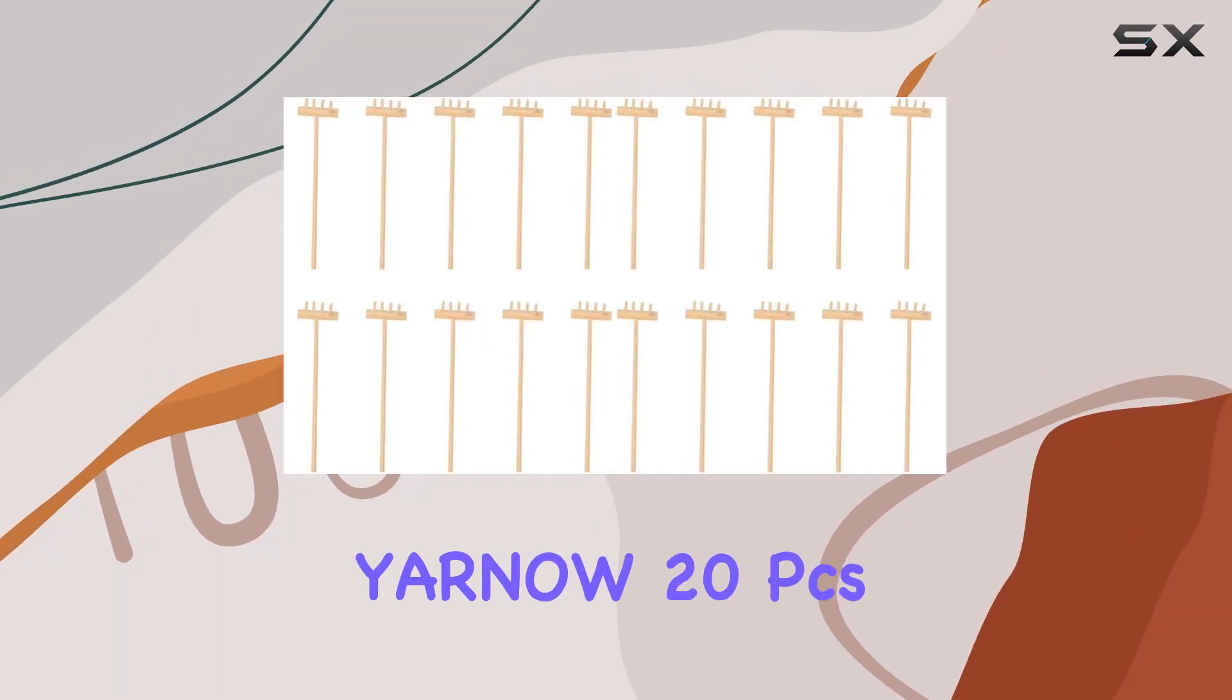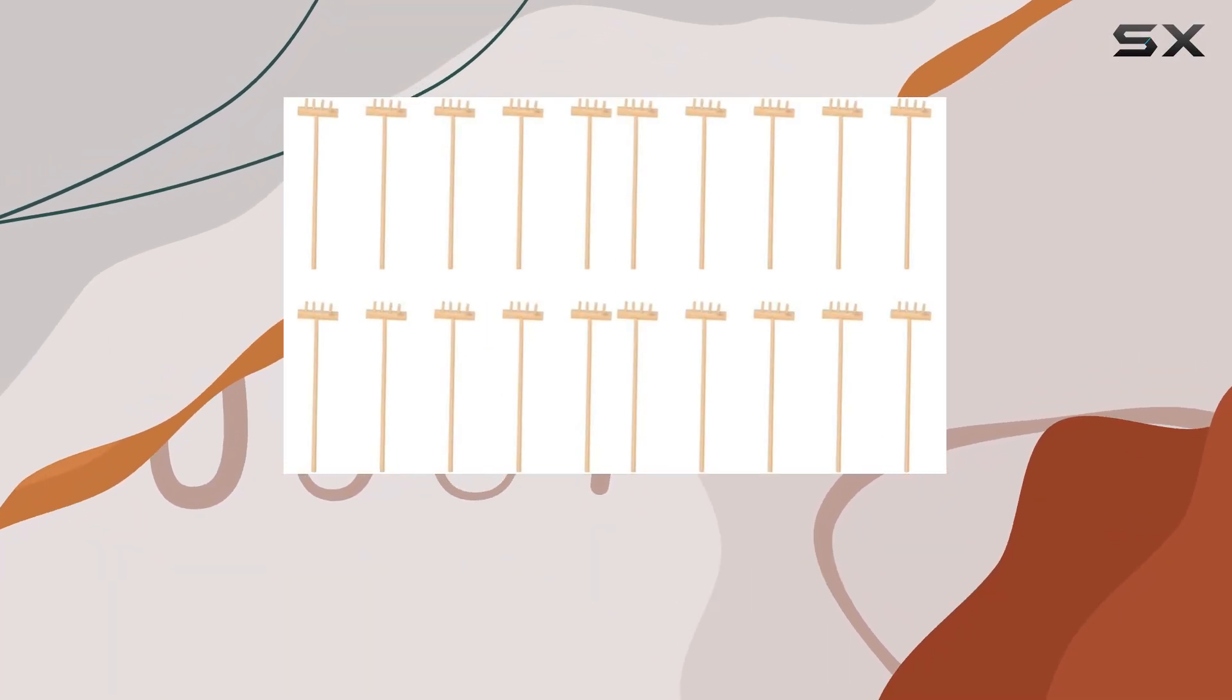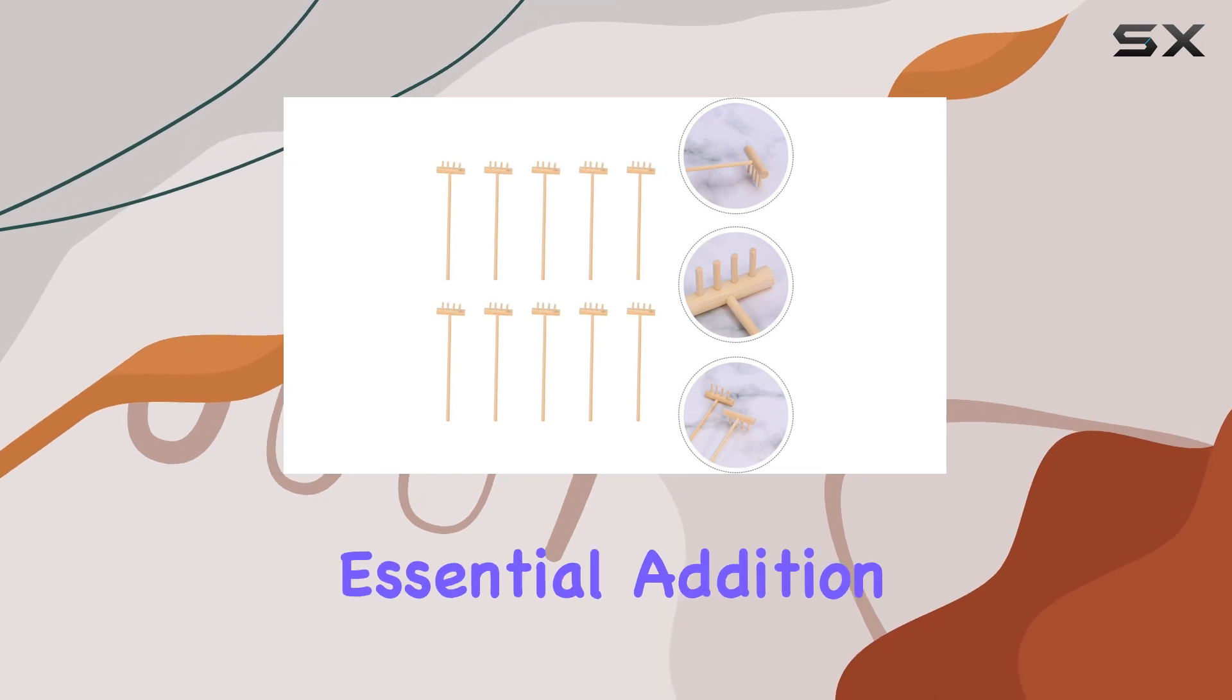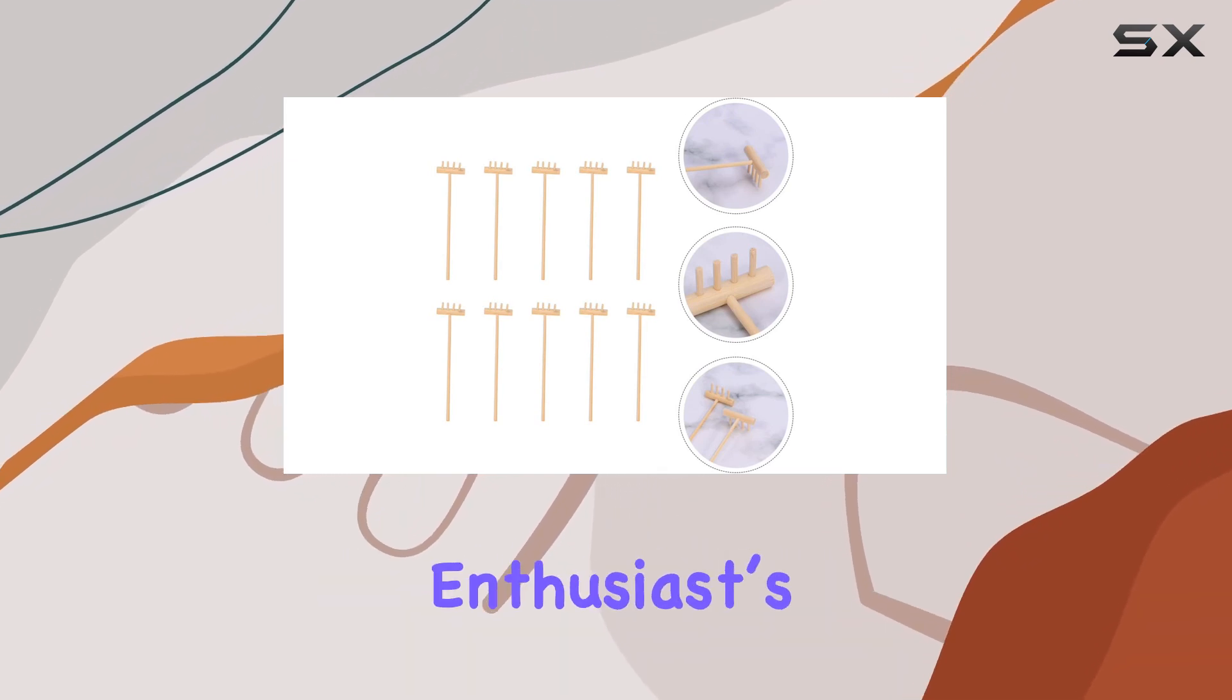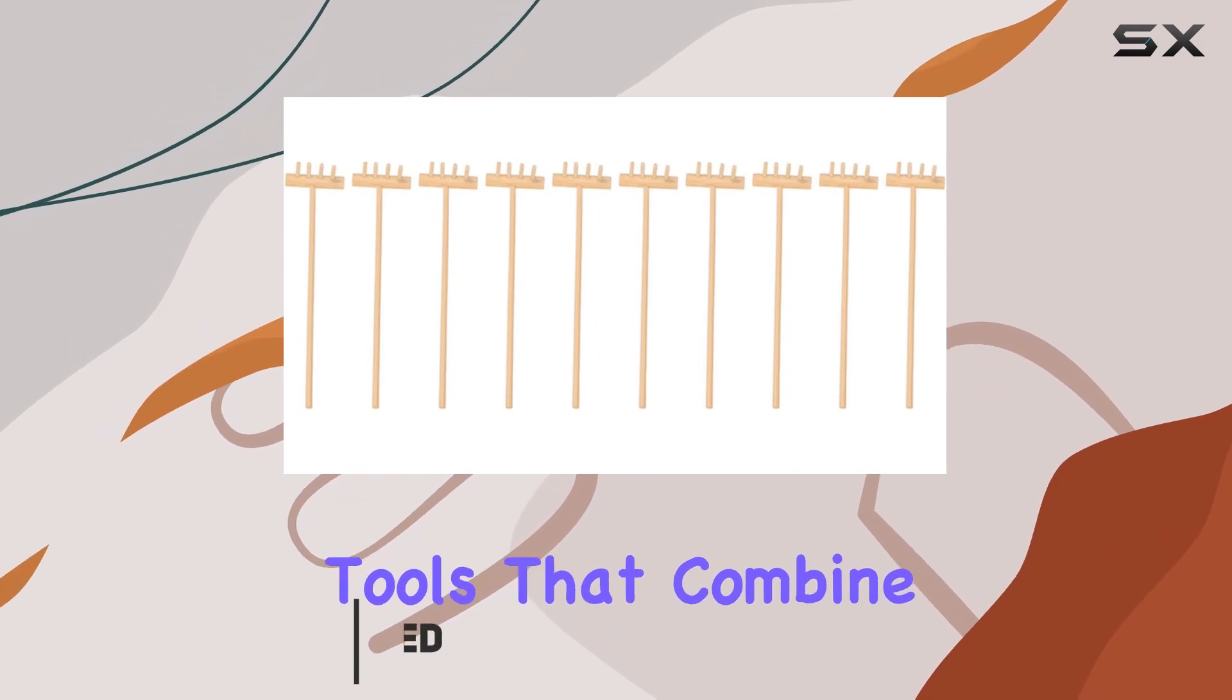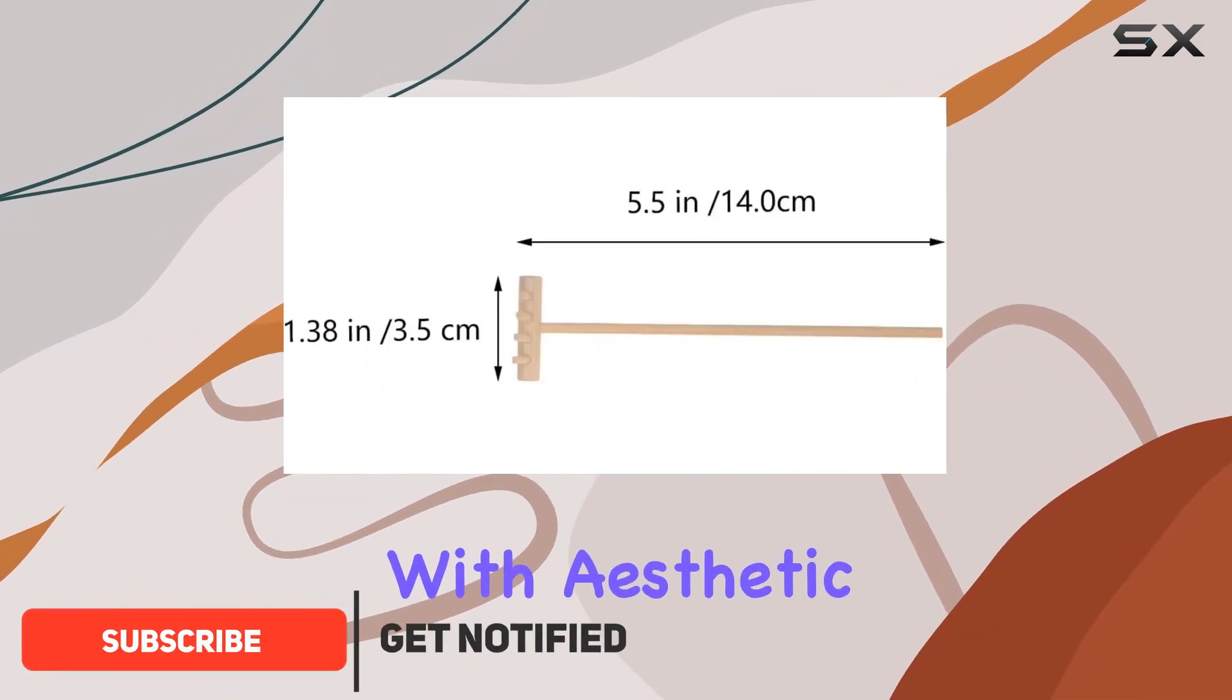Today, we're taking a closer look at the Yarno 20PCS Mini Zen Sand Rakes. These rakes are an essential addition to any Zen garden enthusiast's collection, especially if you appreciate tools that combine functionality with aesthetic appeal.